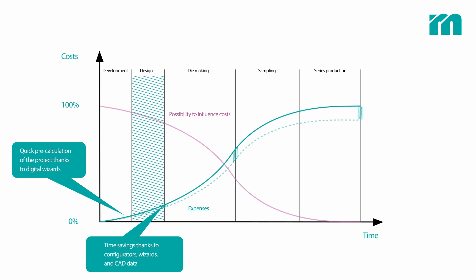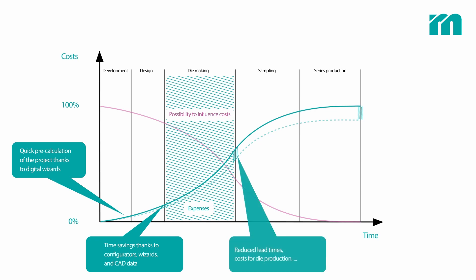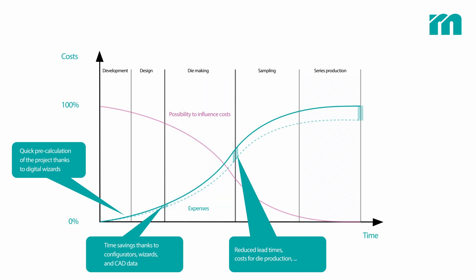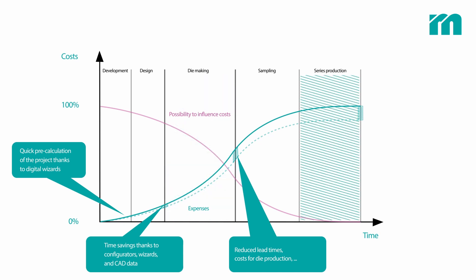In die making, the lead time is reduced because the components are already available in the prefabricated and partly heat-treated state. In series production, non-productive times and waiting times caused by broken dies are reduced by using standardized parts.